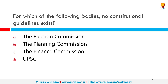For which of the following bodies do no constitutional guidelines exist? The correct answer is the Planning Commission. Authority for creation of the Planning Commission was not derived from the Constitution of India or statute. It was an arm of the Central Government of India until Niti Aayog replaced it.